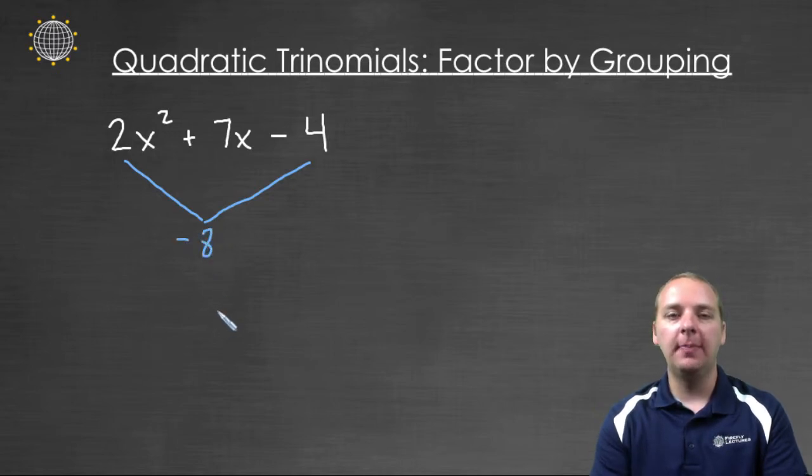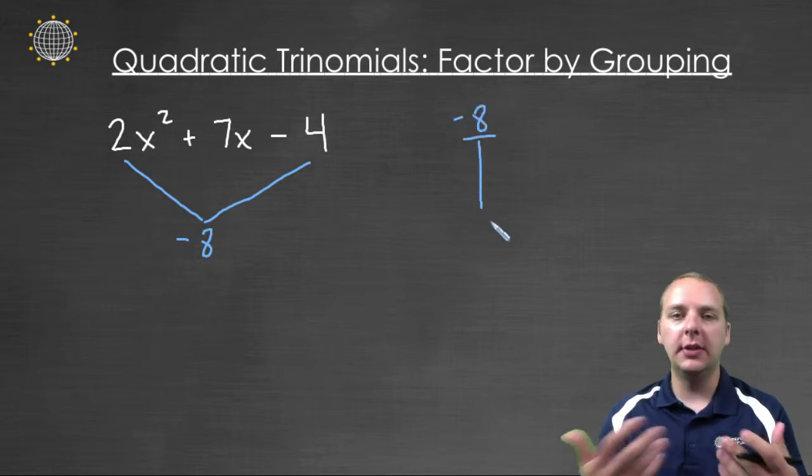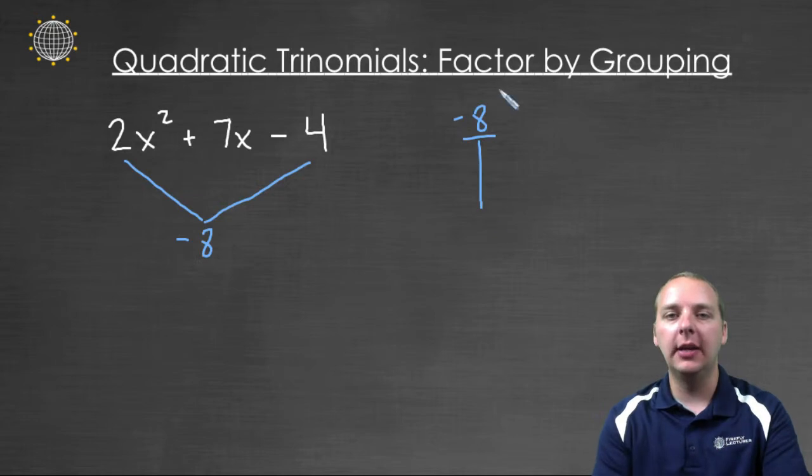And what we're going to do is we're going to look for different factors of -8. What numbers can multiply to give us -8? Well we could take -1 times 8, or we could take 1 times -8.